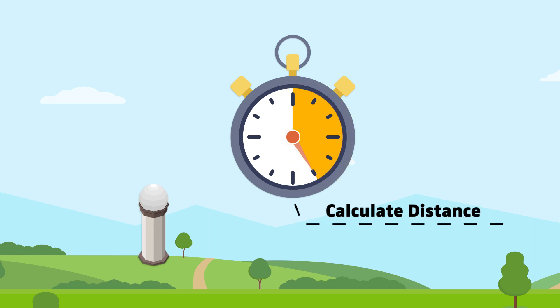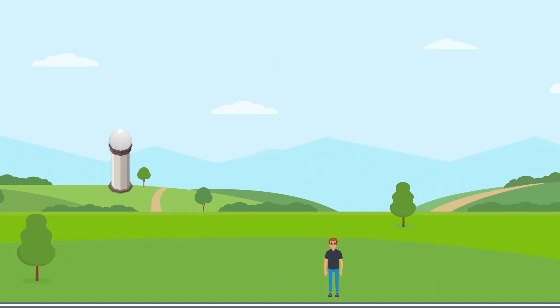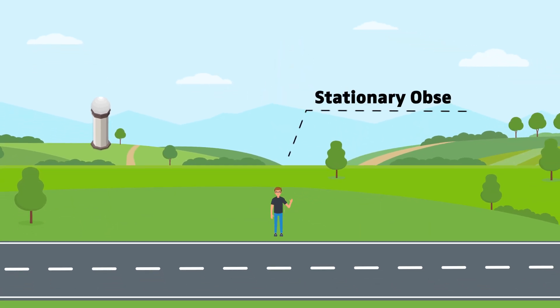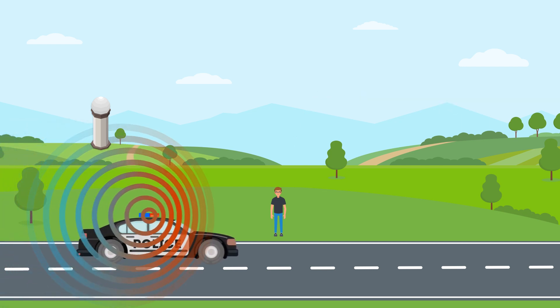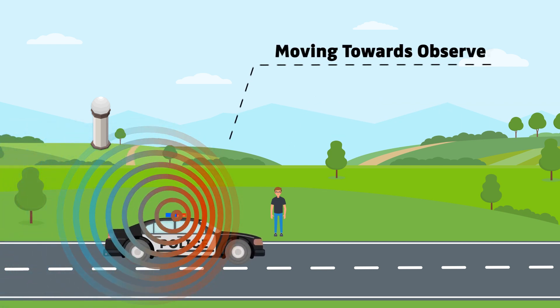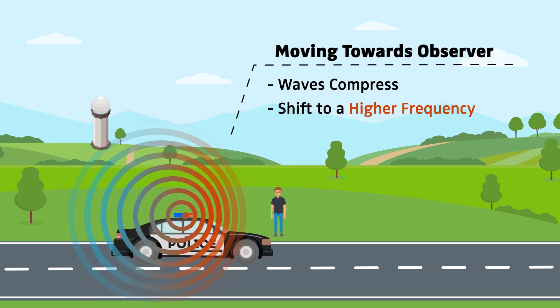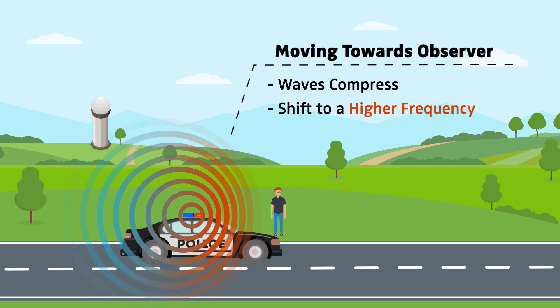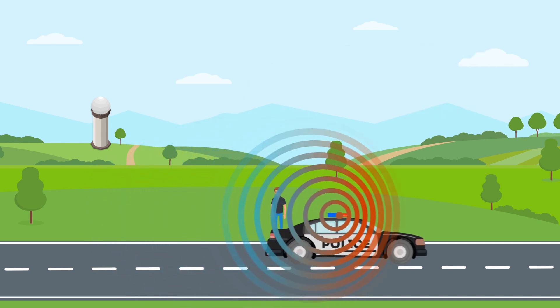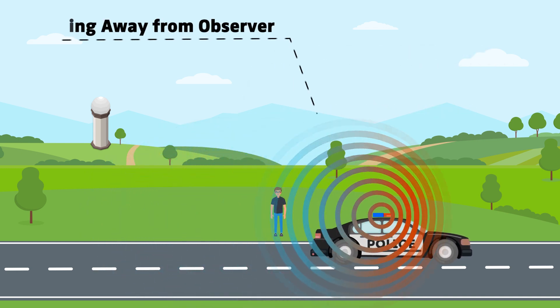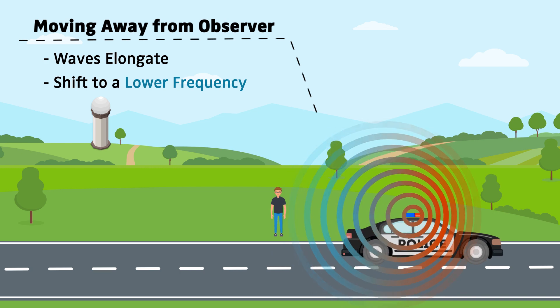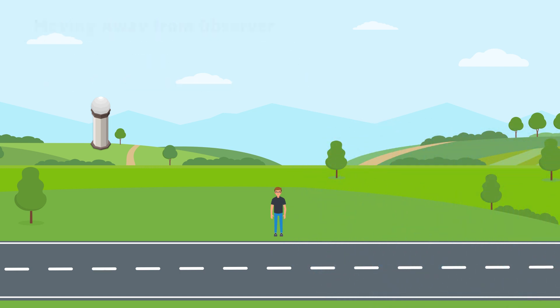Doppler radar systems reveal additional information via the Doppler effect. Here we have a stationary observer. Waves, in this case the sound waves of the siren, that are emitted from a moving object, that is the police car, compress or shift higher in frequency when moving towards the observer. The waves stretch out or shift lower in frequency when moving away from the observer. This is why we hear a pitch change as a police car drives down a road.